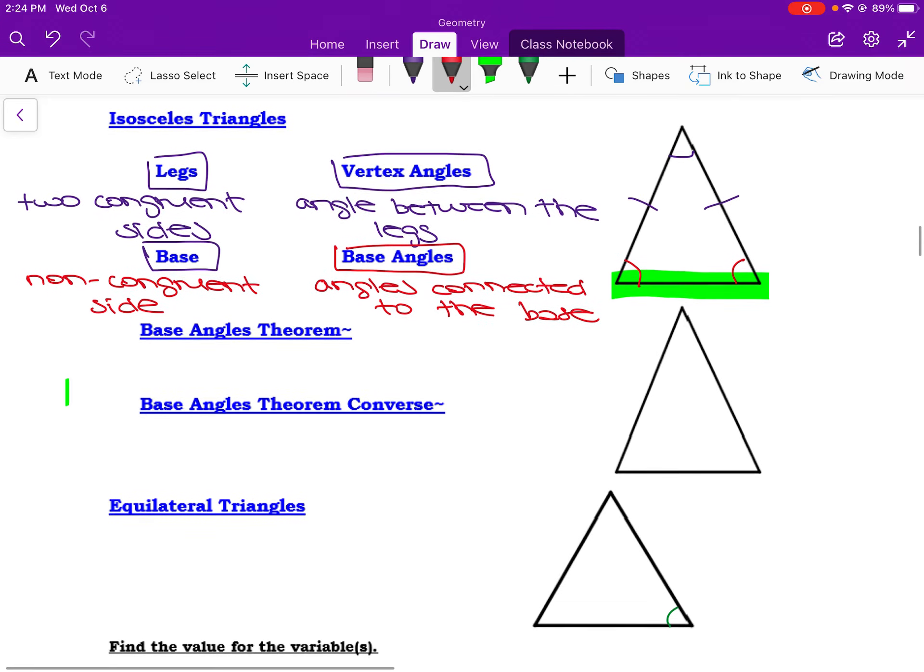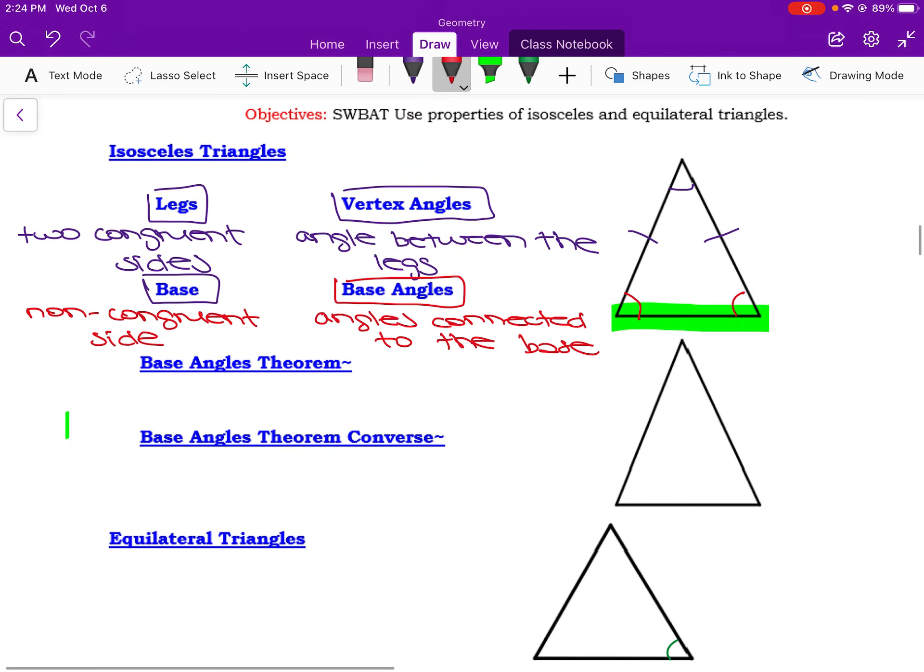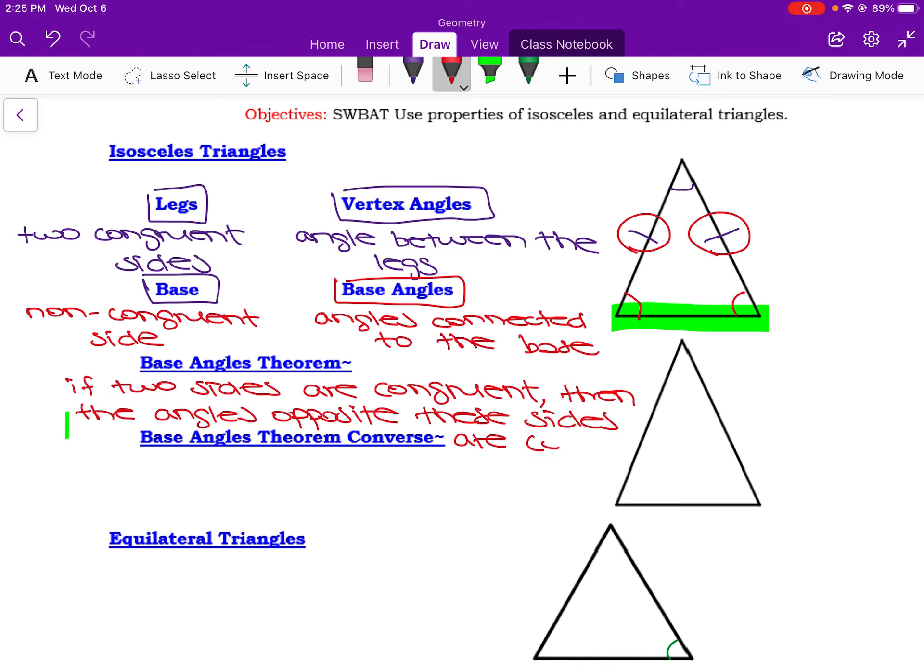That's kind of what we need to know about isosceles triangles. Now we also have some theorems about the arrangements here. So my base angles theorem tells me that if two sides are congruent, and this is given in an isosceles triangle, but we know that if my two sides are congruent, which would be these two, then the angles opposite these sides are congruent.